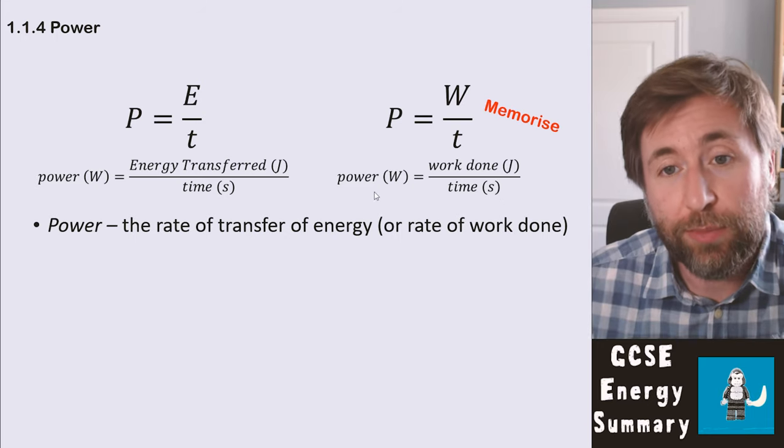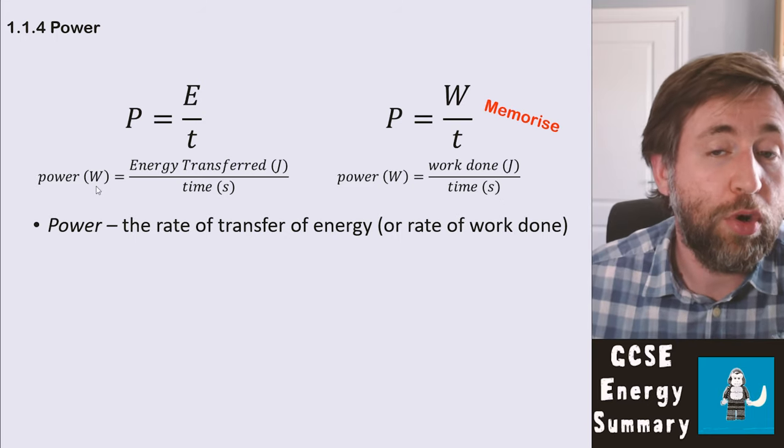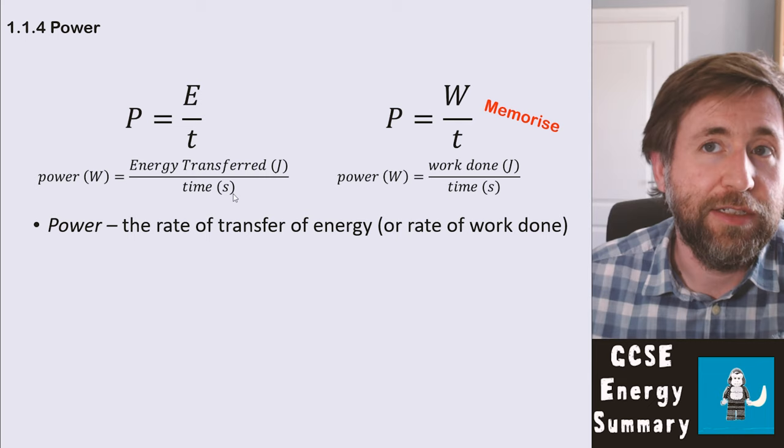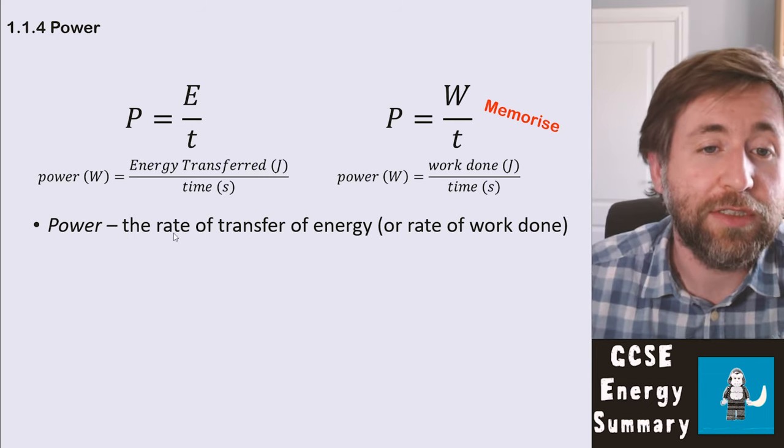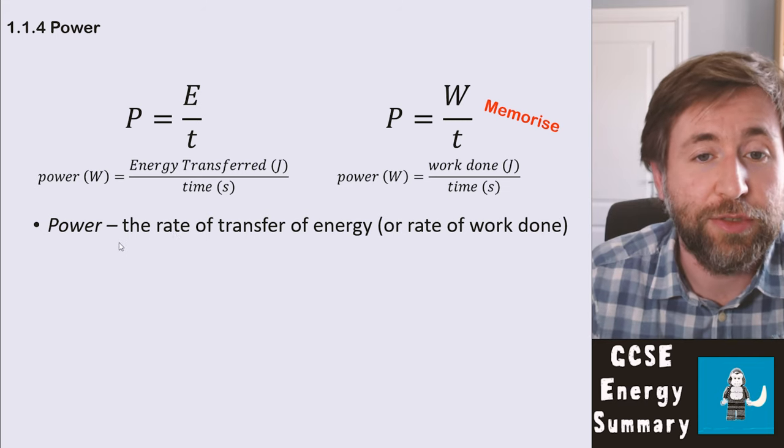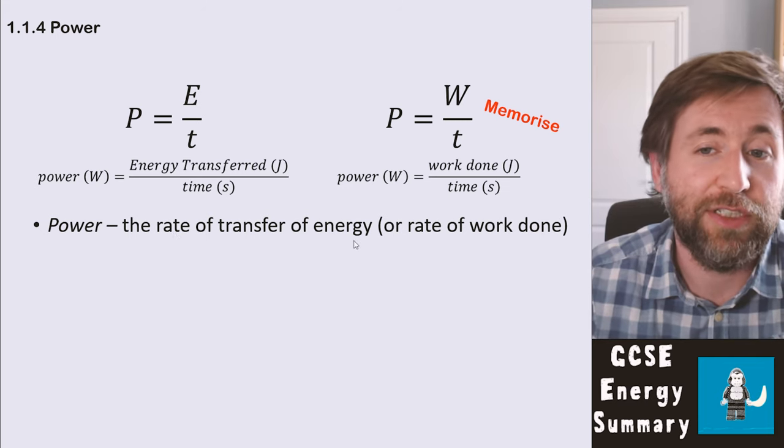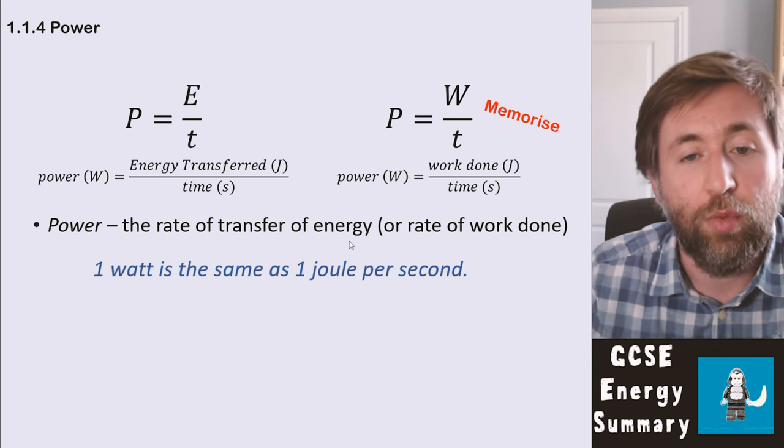But importantly, the watt is a joule per second. Energy transferred in joules divided by time in seconds gives you power in watts. Both those equations state the definition of power, which you should memorize: the rate of transfer of energy or the rate of work done. One watt is the same as one joule per second.